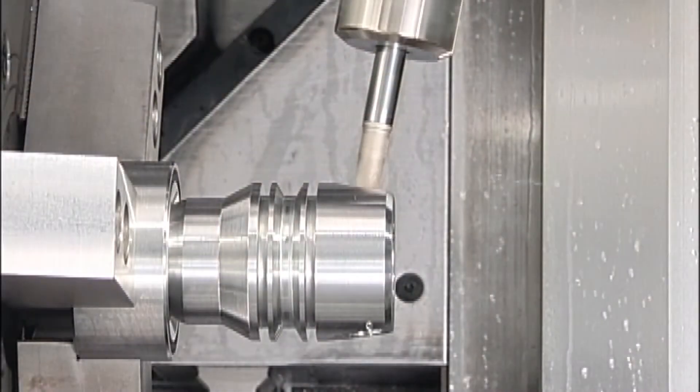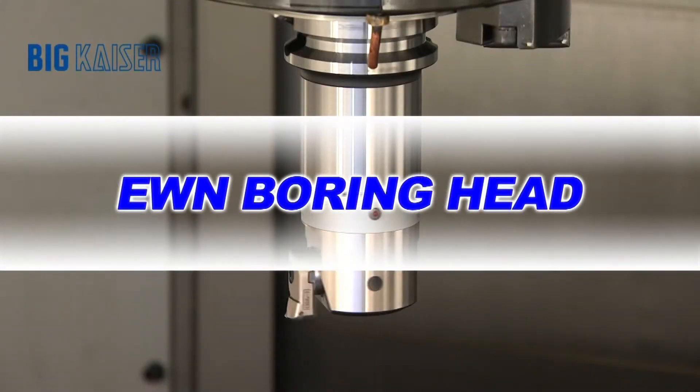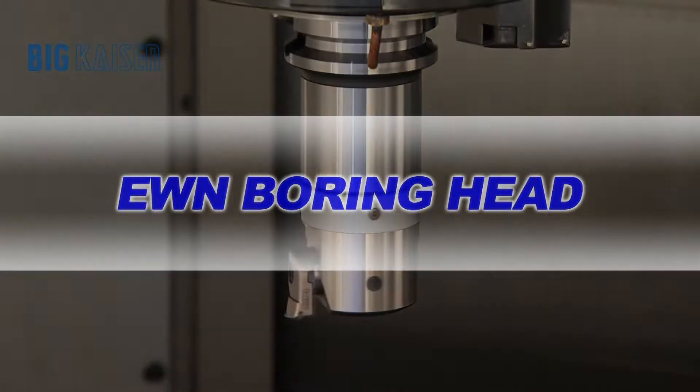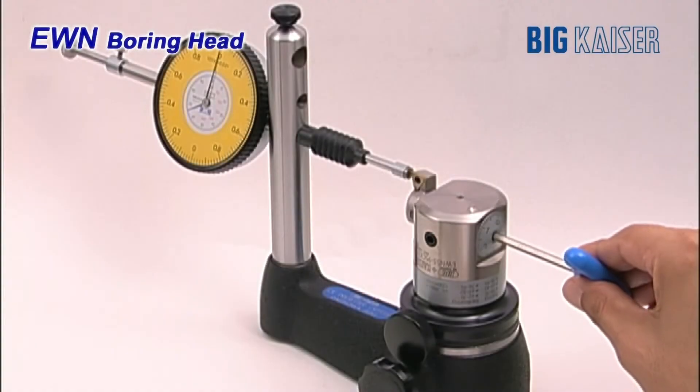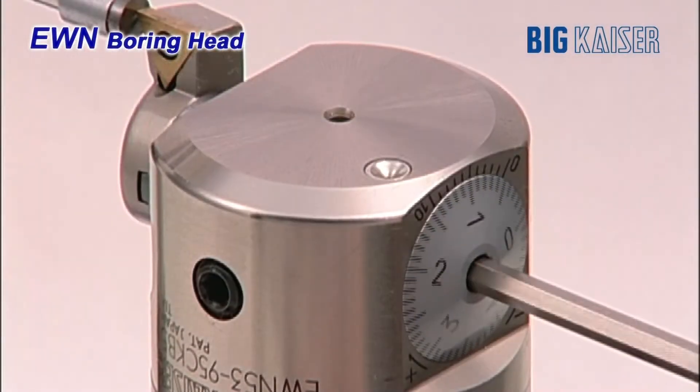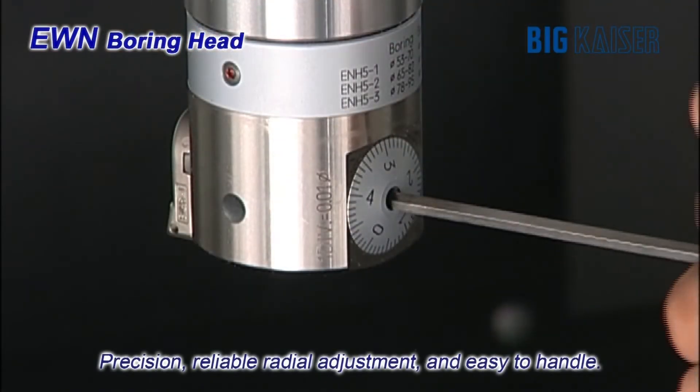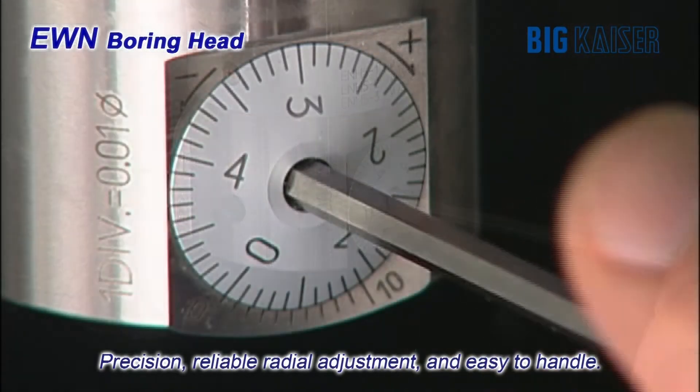For intermediate diameters, the EWN series of boring heads provides high precision and versatility. Precision components and large adjustment dials make it easy to make quick and accurate adjustments. The EWN series has the reputation of being the most reliable in the market.